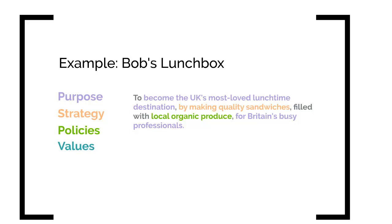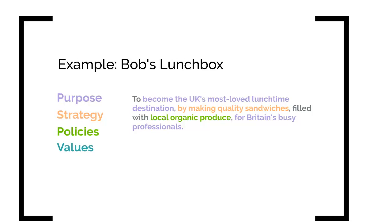Bob's mission is to become the UK's most loved lunchtime destination by making quality sandwiches filled with local organic produce for Britain's busy professionals. Looking at the colour coding: the purpose — in purple — is to become the UK's most loved lunchtime destination. The strategy is making quality sandwiches. The policies — in green — are to use only local organic produce. From the mission statement we can infer that Bob's Lunchbox values quality, local produce rather than globally sourced produce, and organic produce rather than factory produce.